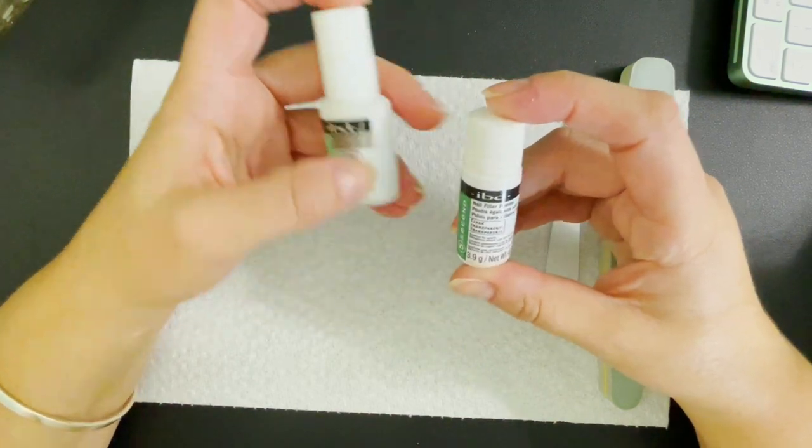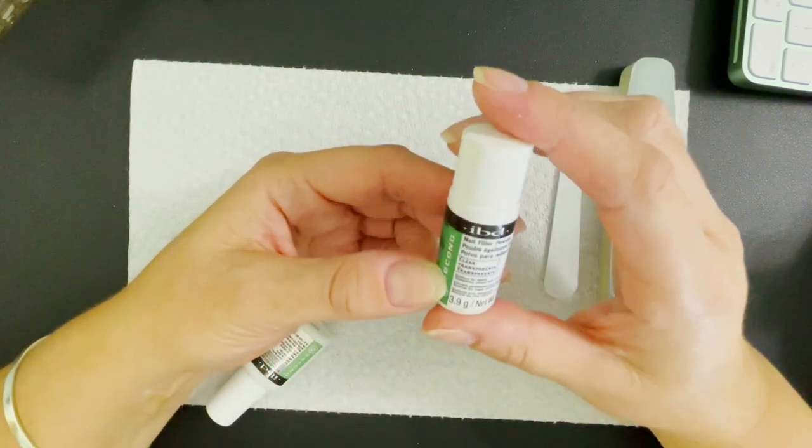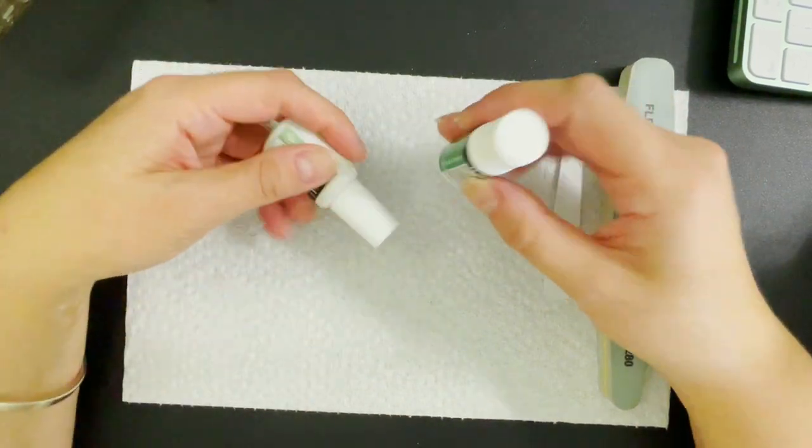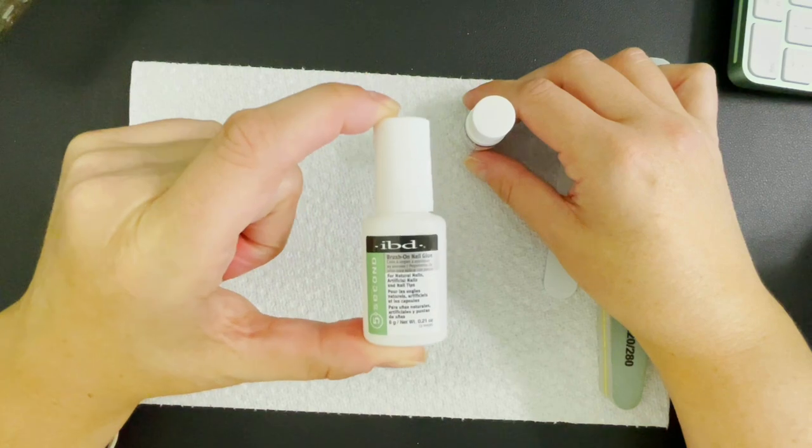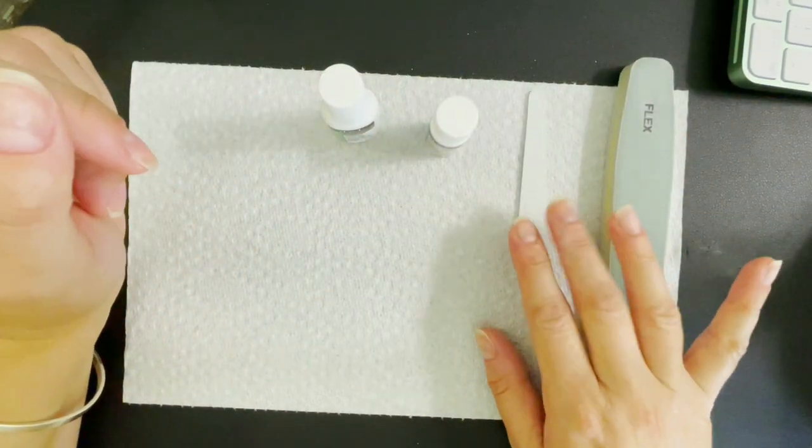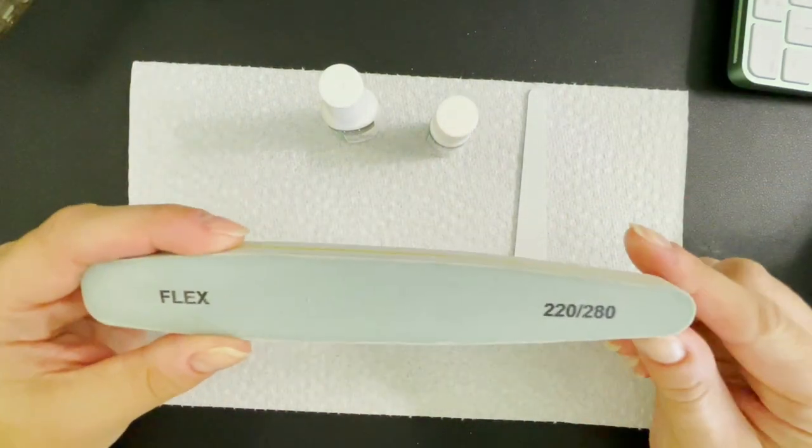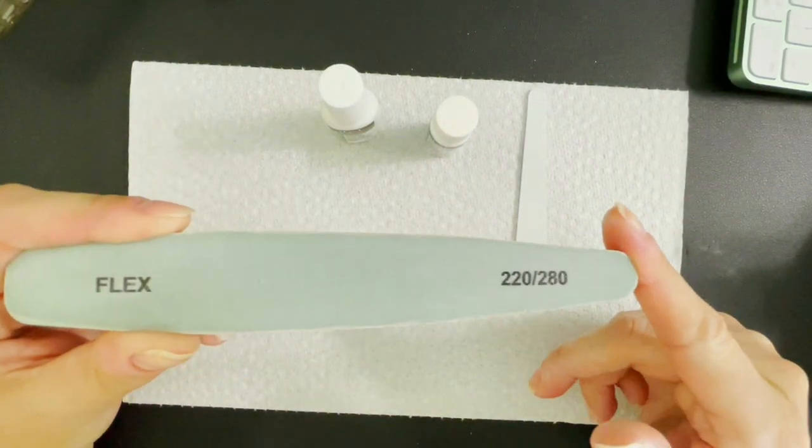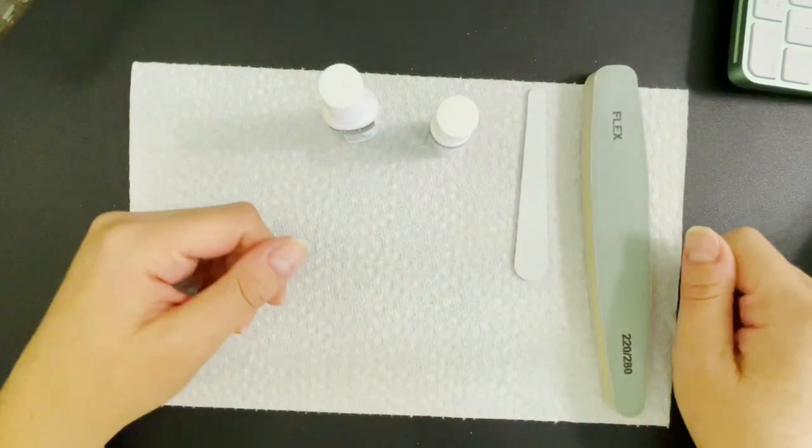Something I like is I found this IBD Beauty Nail Filler Powder and it's clear. So what you need is this little bottle of nail filler powder, nail glue, a file if you need, this is just in case you need to reshape your nail, but really you just need like a buffing block. I used this 220-280 buffer because it was on my desk.